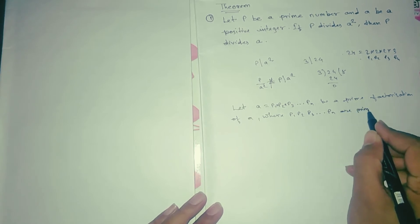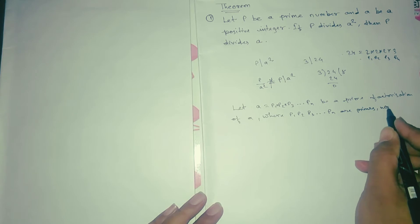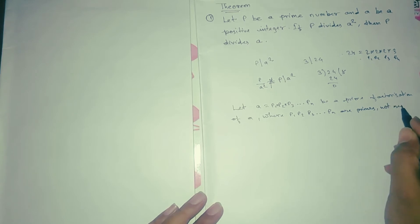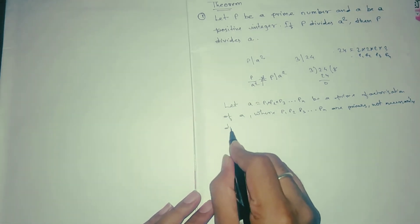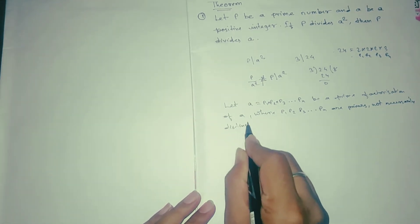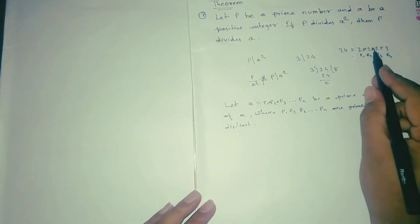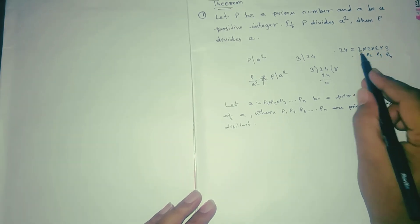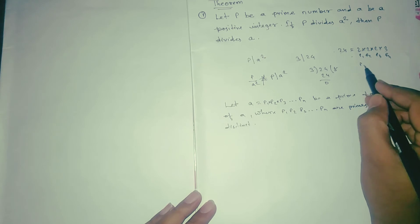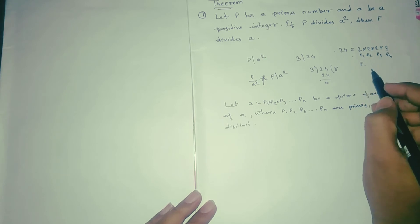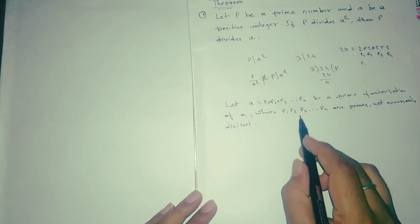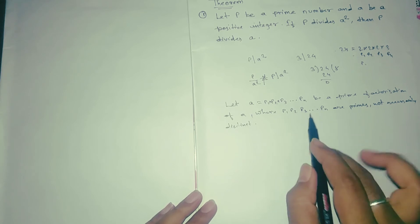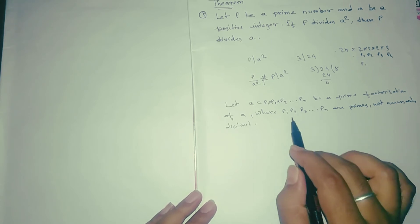Where p1, p2, p3, ..., pn are primes, not necessarily distinct. That means it is not required that they be different numbers. It may be the case that p1 equals p3, or p1 equals p5 — anything can happen here.